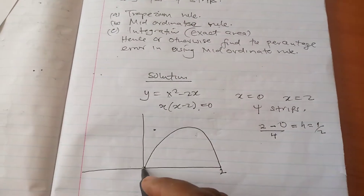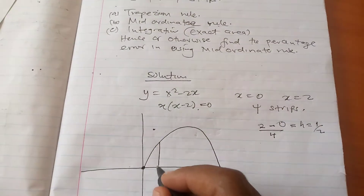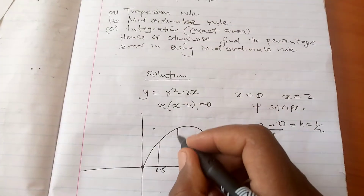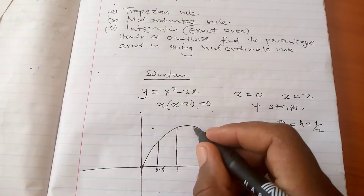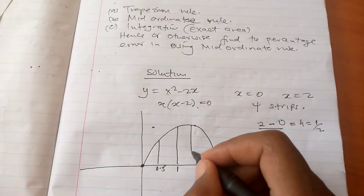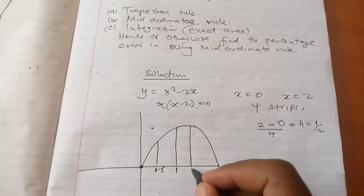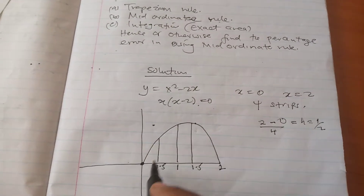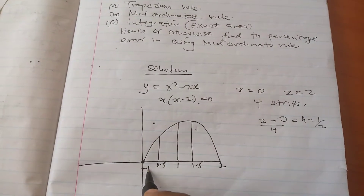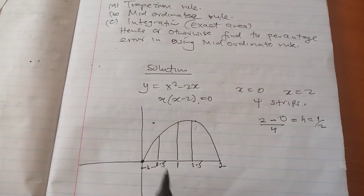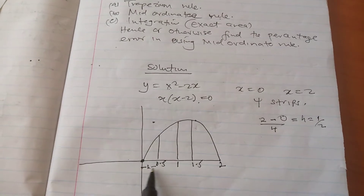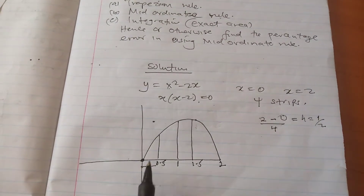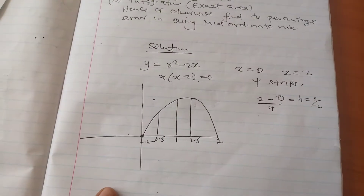So we move from 0 in steps of 0.5: the x values are 0, 0.5, 1, 1.5, and 2. The width of each strip is 0.5, and four halves make 2.